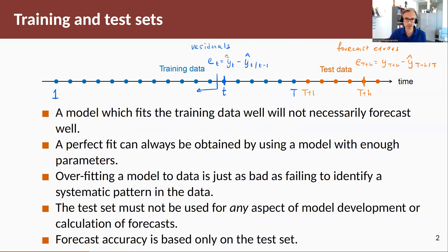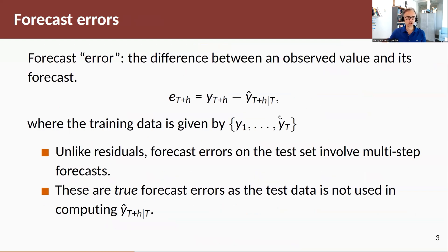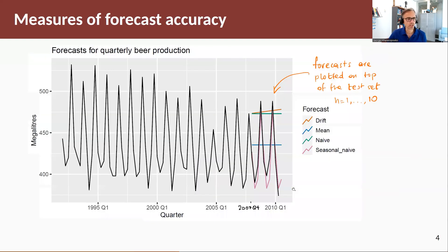Our residuals are in-sample errors given by E_T = Y_T minus Ŷ_T conditional on T minus one, computed over the training set. Our forecast errors are given by E_{T+H} = Y_{T+H} minus our H-step ahead forecast. These are true forecast errors, as the test data is never used for computing that forecast.